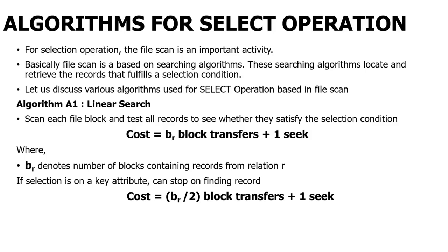Similarly, if the attribute you want to access is a key attribute, then you can stop the record finding early and calculate with the formula: cost is equal to BR/2 block transfers plus 1 seek. The 1 seek is the time taken for finding that particular block.